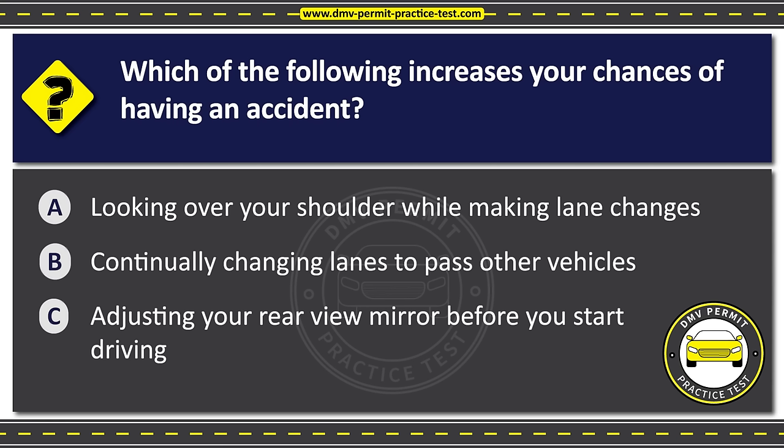Question thirty-two. A pedestrian crossing at a corner has the right of way. Option A: Only at controlled intersections. Option B: Whether or not a crosswalk is marked. Option C: Only when a crosswalk is painted on the street. The correct answer is Option B: Whether or not a crosswalk is marked.